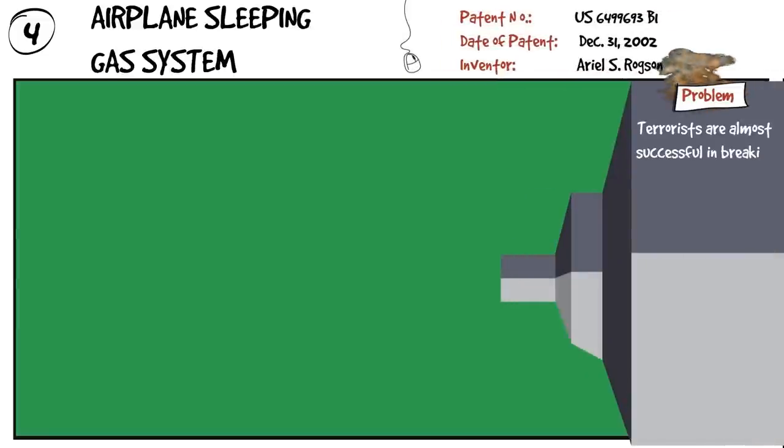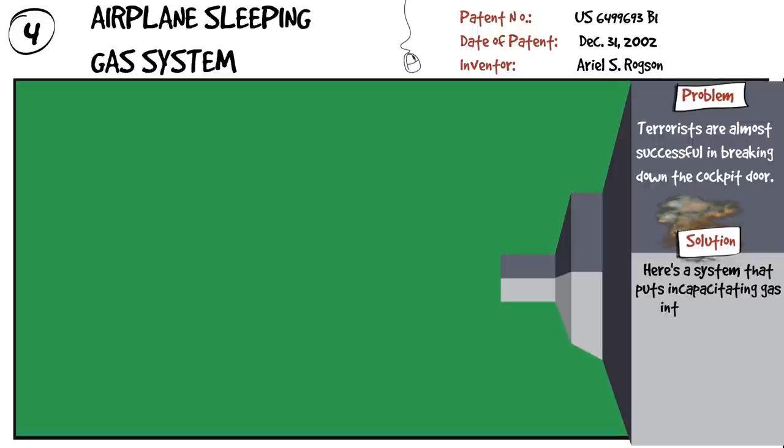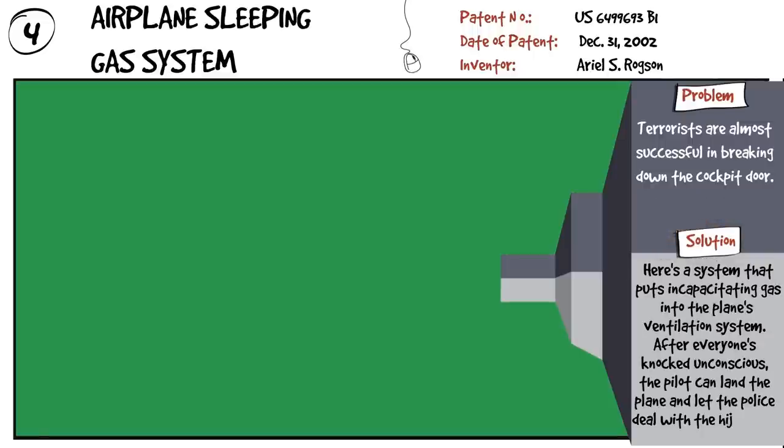Airplane sleeping gas system. Terrorists are almost successful in breaking down the cockpit door. Here's a system that puts incapacitating gas into the plane's ventilation system. After everyone's knocked unconscious, the pilot can land the plane and let the police deal with the hijackers.